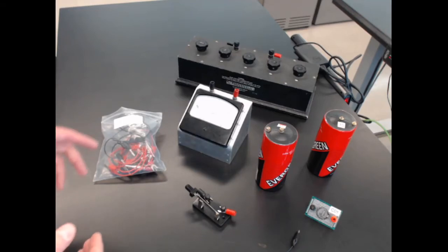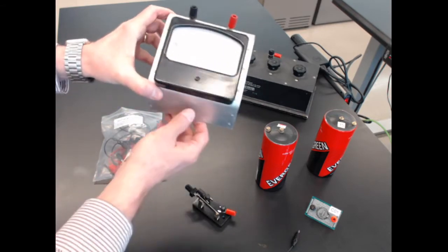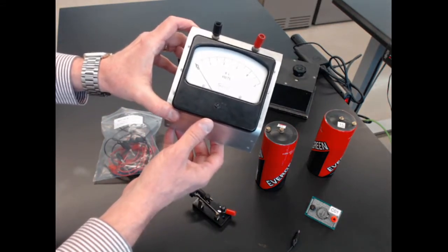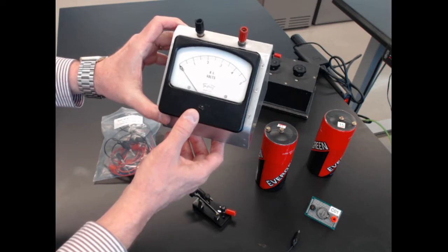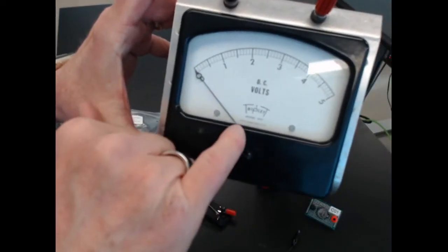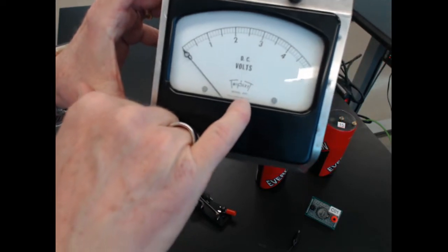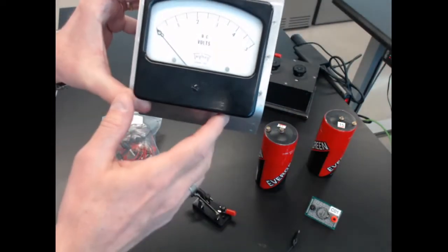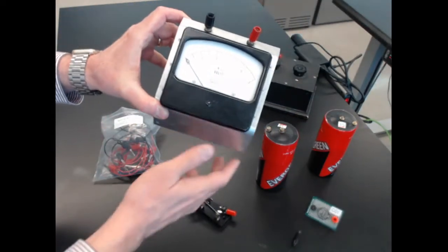Okay, here's the equipment we're going to use for this lab. First, the main thing is this voltmeter, a Triplet model 420. On the dial it says 1,000 ohms per volt. It's a 5 volt meter, so that gives about 5,000 ohms of internal resistance.